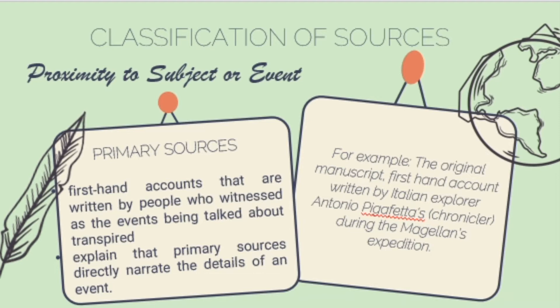Primary sources can usually be found in memoirs, diaries, and personal journals. Some primary sources are also written by other individuals on behalf of witnesses of an event. This is especially true for written materials created by anthropologists who report the experiences and traditions of tribes who are unable to write their factual experiences but can articulate and share them orally — because these anthropologists actually live with the natives to know their culture firsthand.